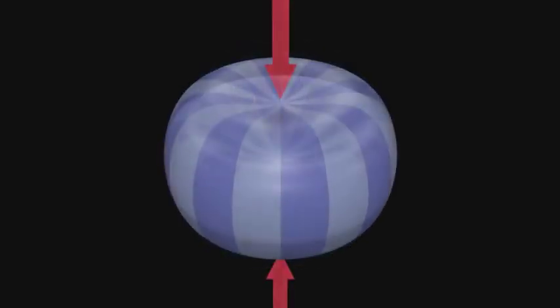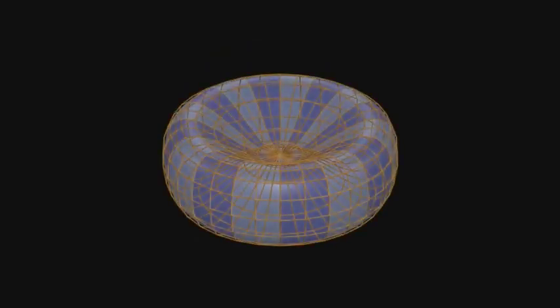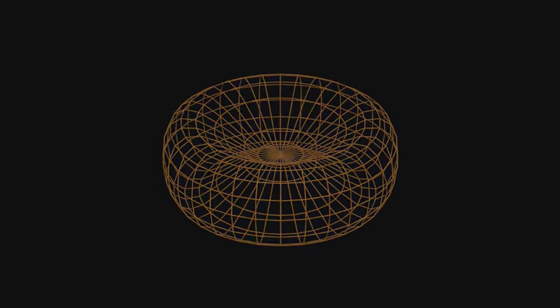By imploding a sphere and putting the north pole, which is rotating anticlockwise, against the south pole, which is rotating clockwise, you create a monopolar point on the equatorial plane.